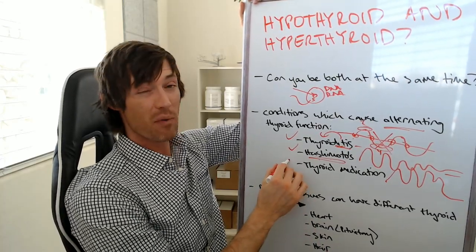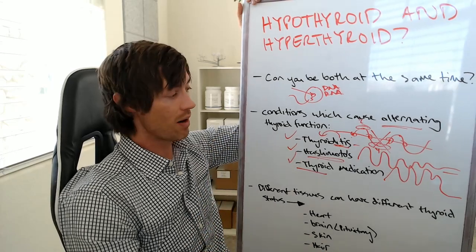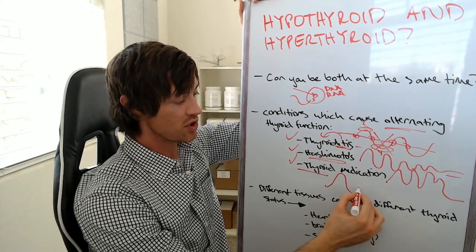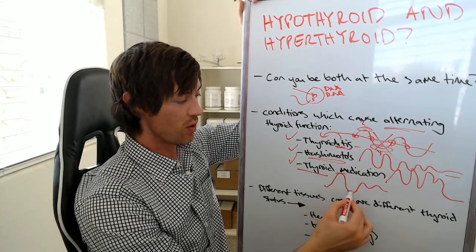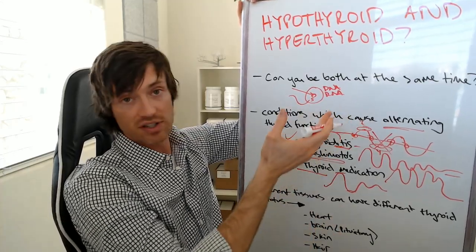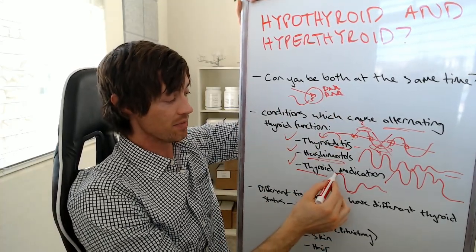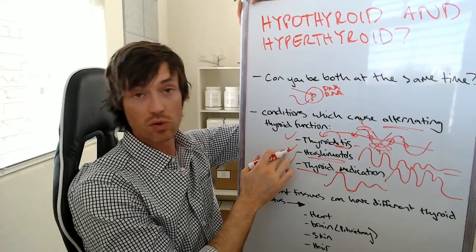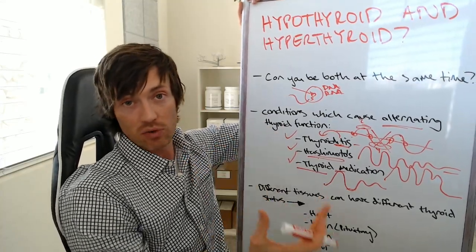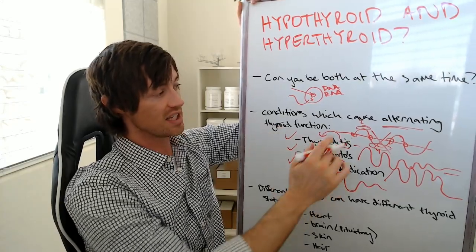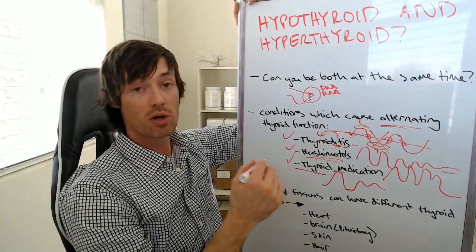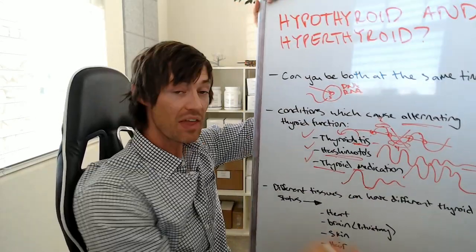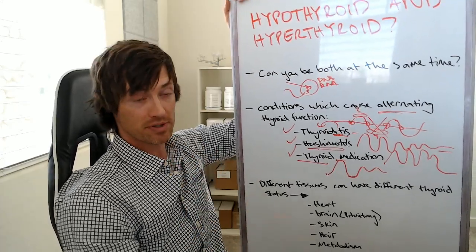And then I also want to point out that thyroid medication can also do this. If you're taking thyroid medication, if you take too much, you'll be too high. If you take too little, you'll be too low. So you need to find that sort of sweet spot. Now, a lot of people bounce between too high and too low and somewhere in between. So they can actually feel the differences in hyperthyroidism and hypothyroidism simply because their thyroid medication dose is off. So you have to figure out, do you think it's your medication? Is it related to an autoimmune disease or is it related to some sort of inflammatory condition of the thyroid gland? All of these conditions can lead to alternating thyroid function.